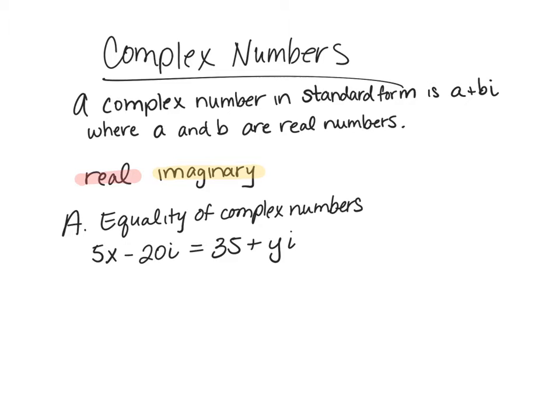The first thing we look at is the equality of complex numbers, and remember if you're watching this you should be taking notes just like if we were in class. The equality of complex numbers means the real part 5x, so we have 5x minus 20i is equal to 35 plus yi.